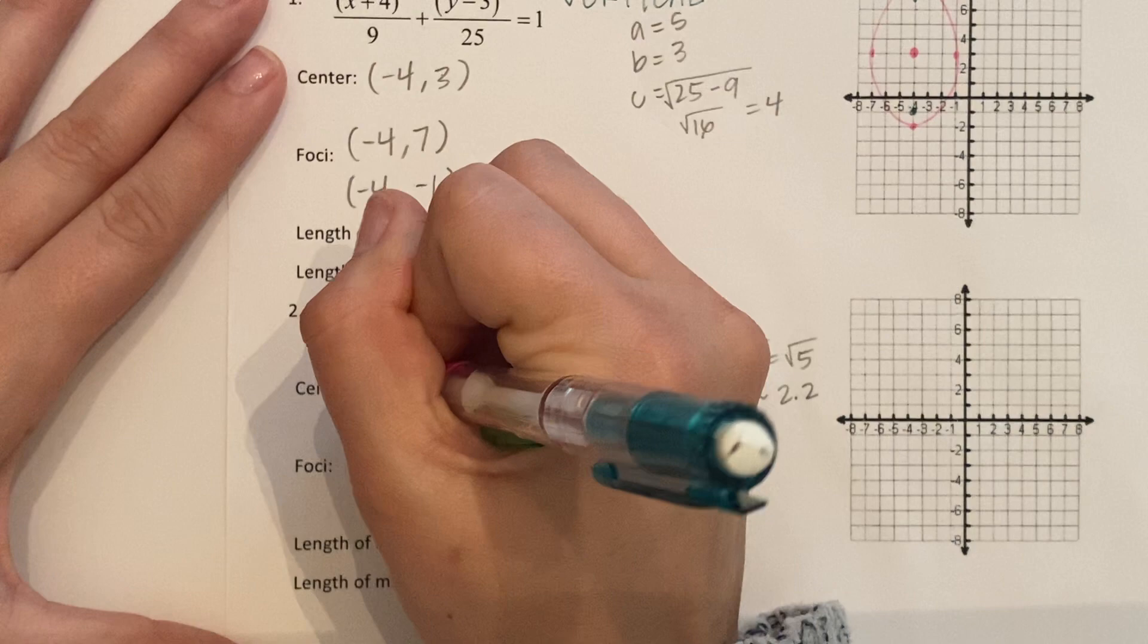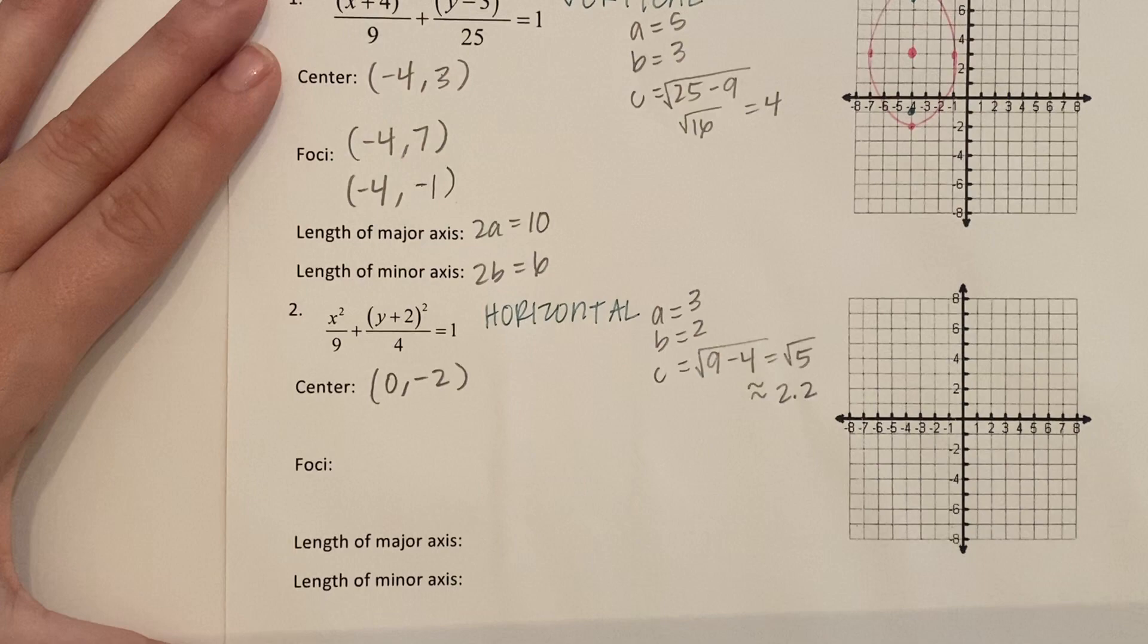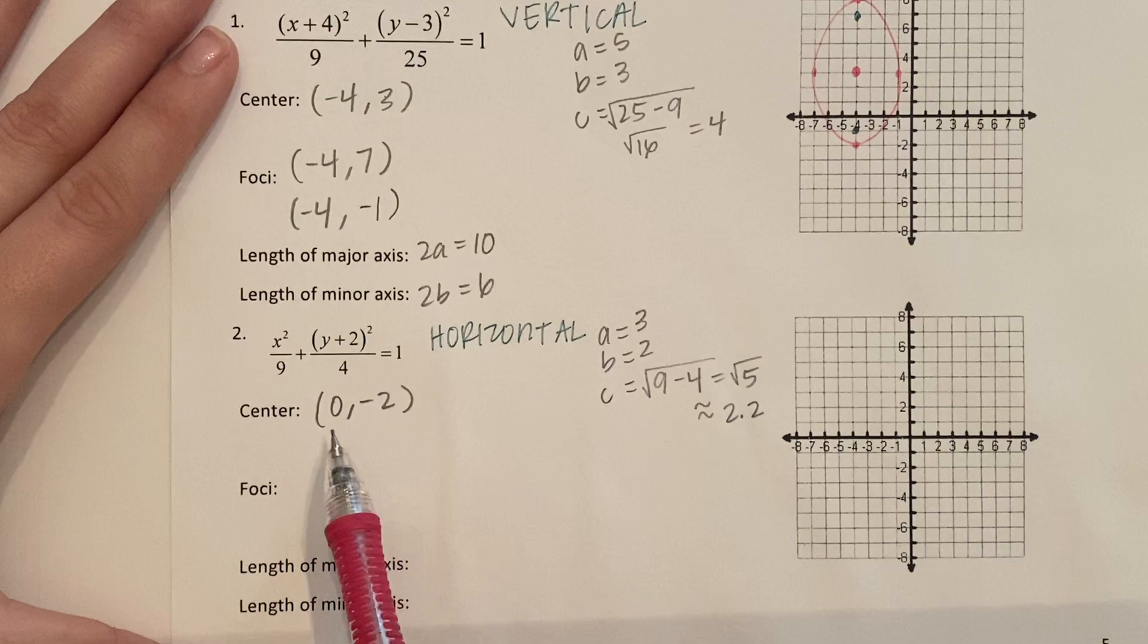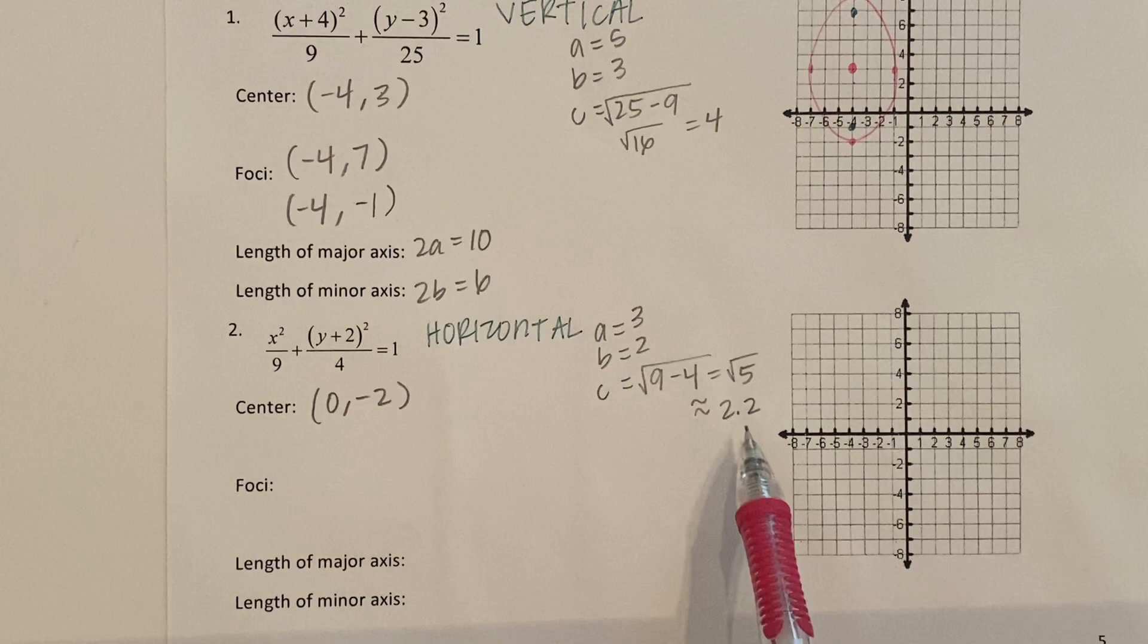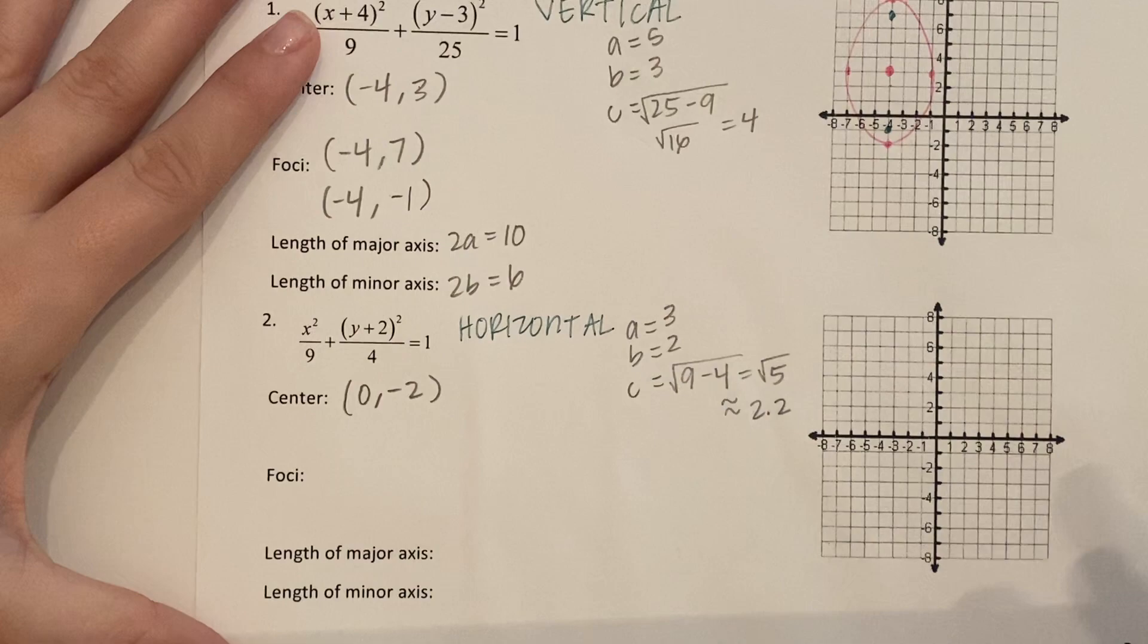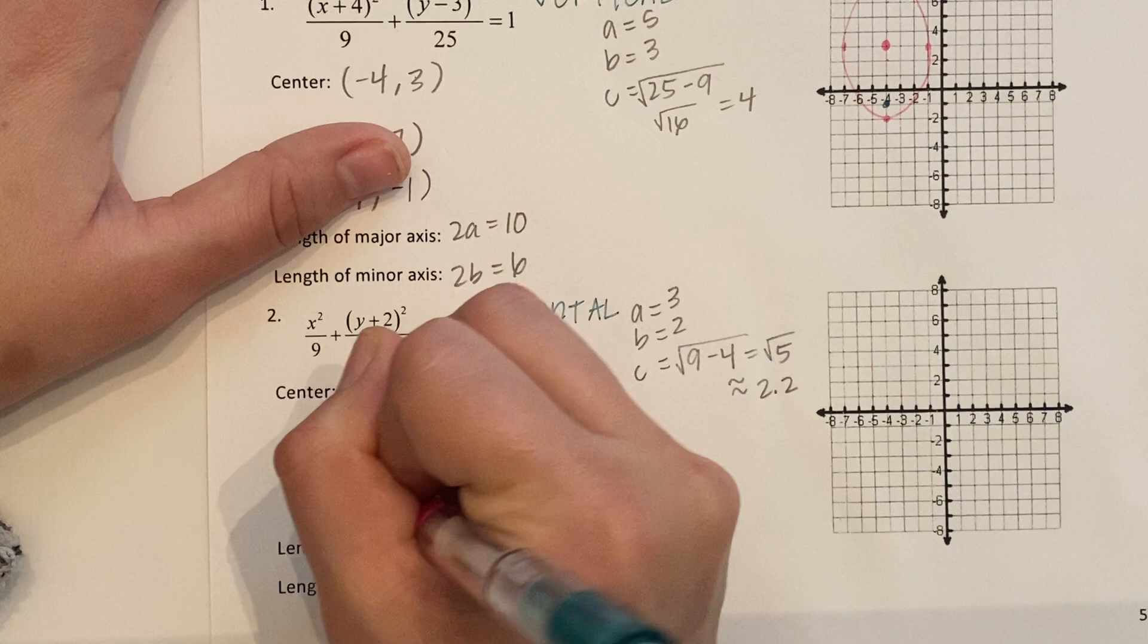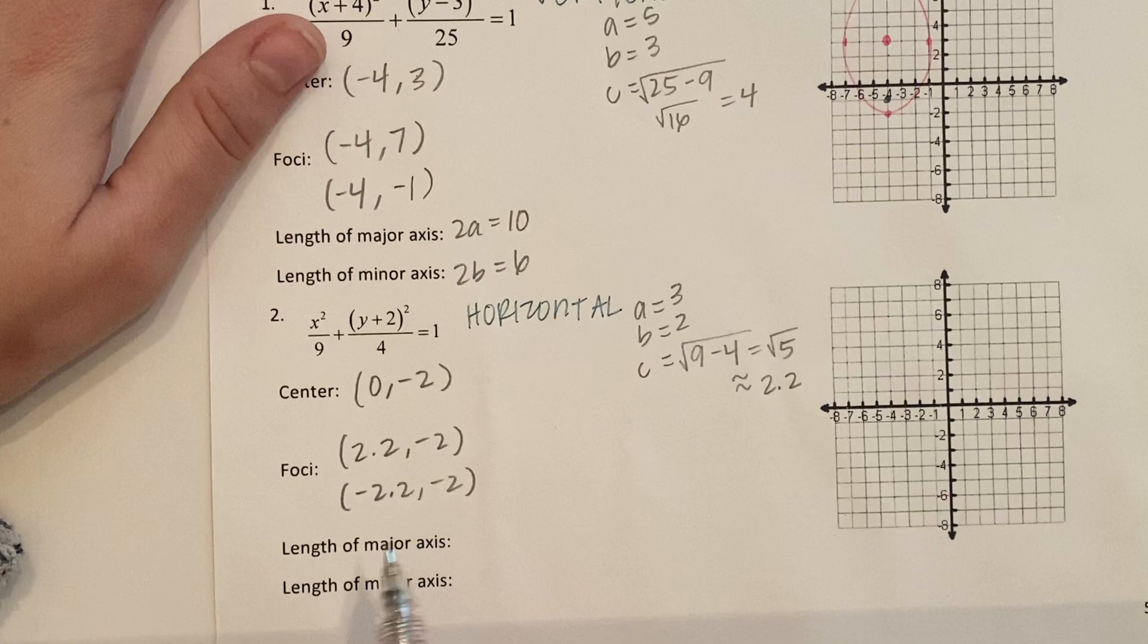So my center comes from the X value and the Y value. There's nothing beside the X. Zero. Pull out the Y. So that'll be negative 2. This is horizontal. So I'm adding and subtracting C from which one of these? The X value, good. X value is horizontal. So I'm going to get my two foci. One where I add 2.2 and one where I subtract 2.2. Zero plus 2.2 and then leave your Y. Zero minus 2.2 and then leave your Y. Length of the major axis. That comes from the bigger number. That's A. So 3 plus 3 is 6. Minor axis, that's 2. 2 plus 2 is 4.